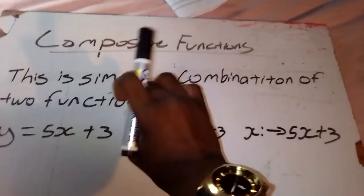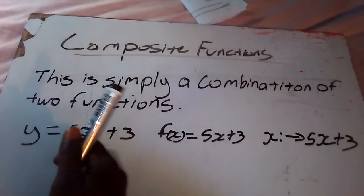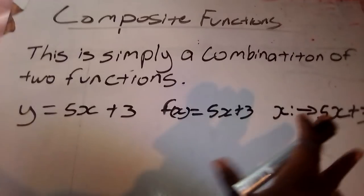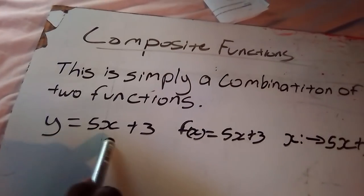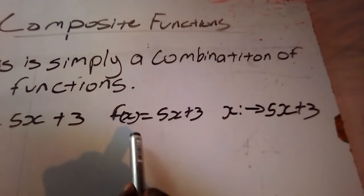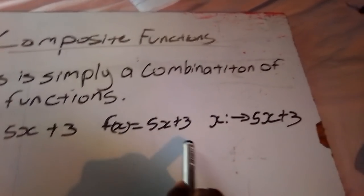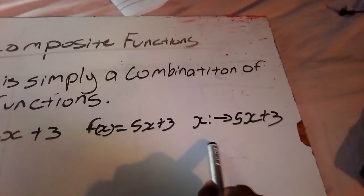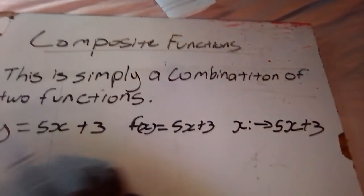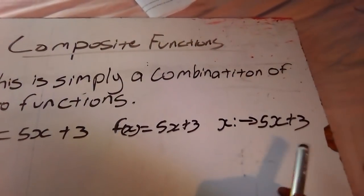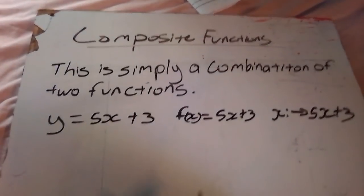Composite functions are when you combine two functions together. The function can be written as y = f(x) + 3, or as f(x) = 5x + 3, or in mapping notation — all three of these forms mean the same thing.